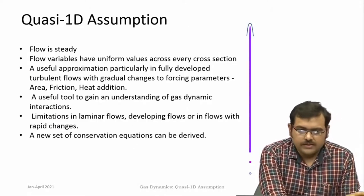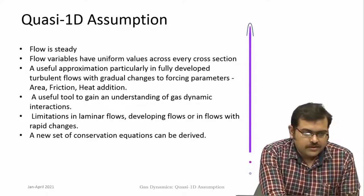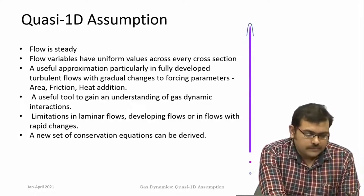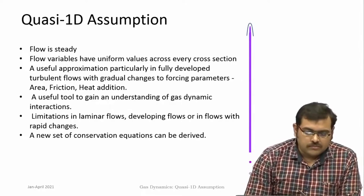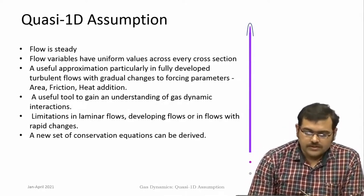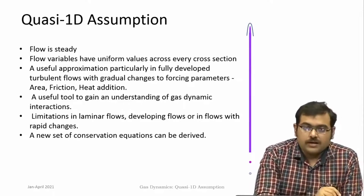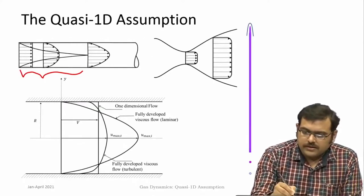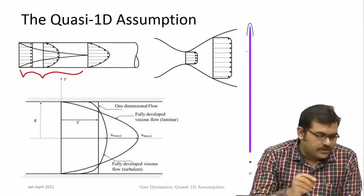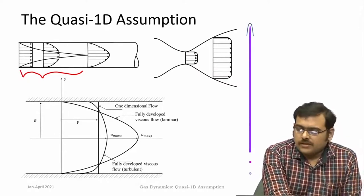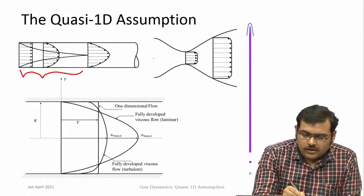There are many different things that can change in a compressible flow, like changes in the duct area, or certain heat being added to the flow, or there is a force of friction which is always present in these flows. This quasi 1D assumption states that flow variables are uniform across every cross section. If you consider a variable duct, then across each cross section you are saying that the flow variables like velocity, pressure, and temperature are uniform, but they can change along the duct.